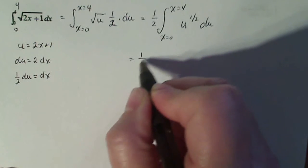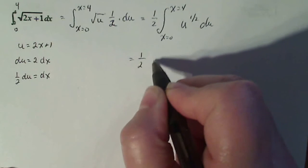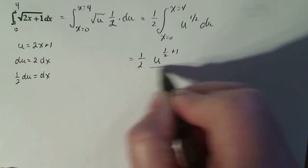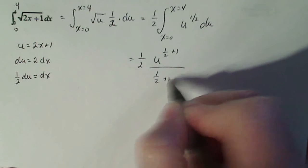Using your power rule: u to the one half plus one divided by one half plus one.